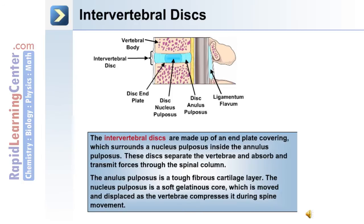The annulus pulposus is a tough fibrous cartilage layer. The nucleus pulposus is a soft gelatinous core, and this is moved and displaced as the vertebrae compress it during spine movement.